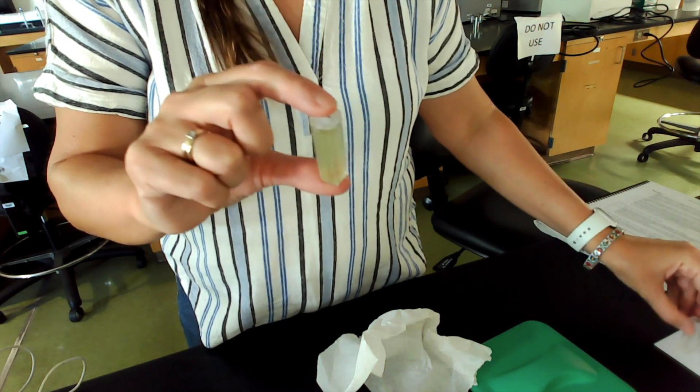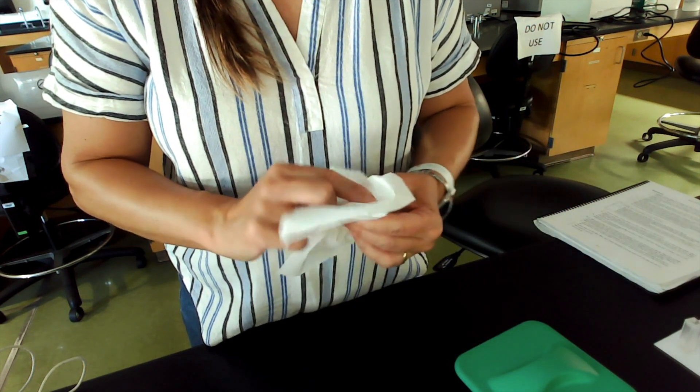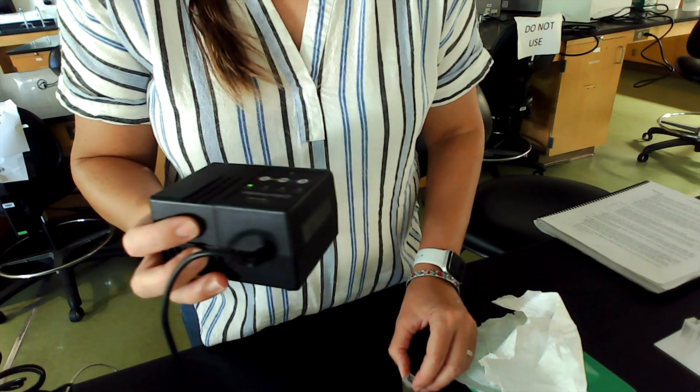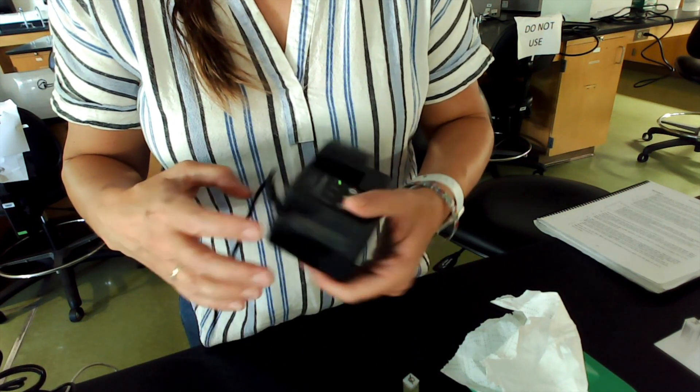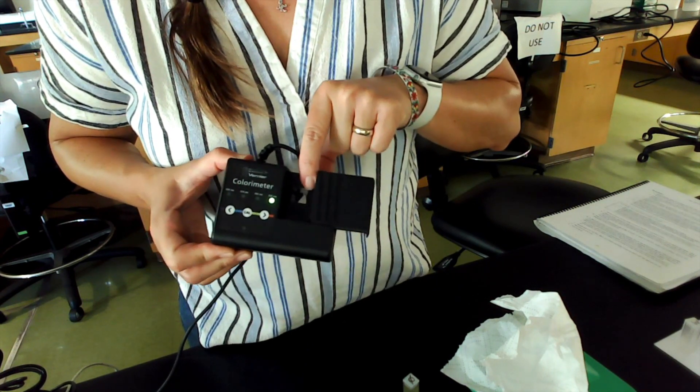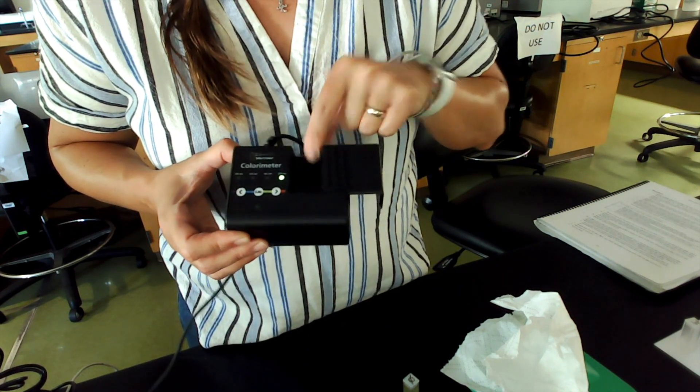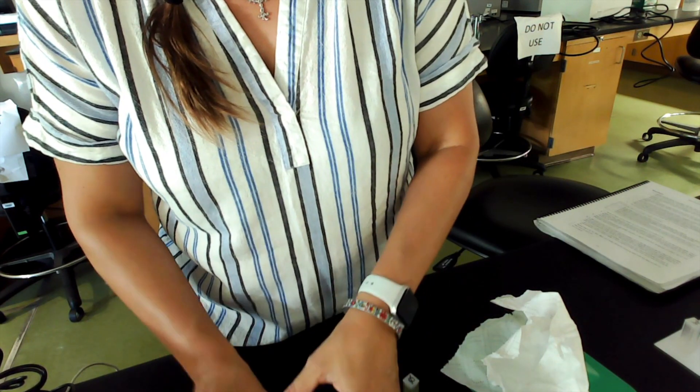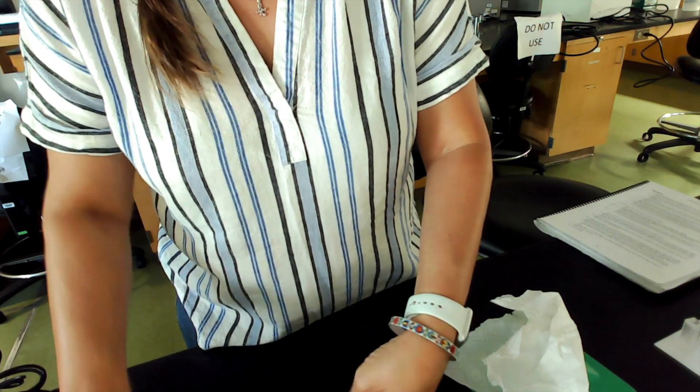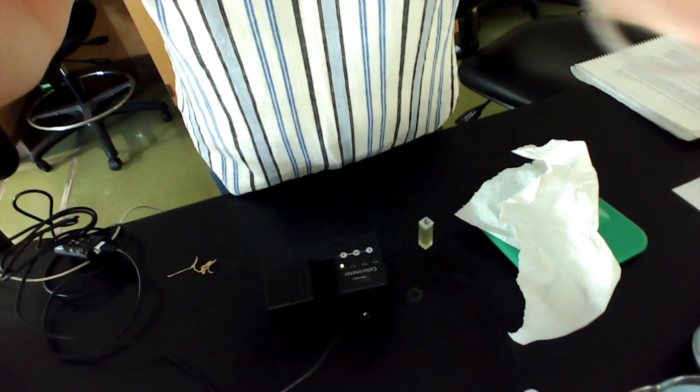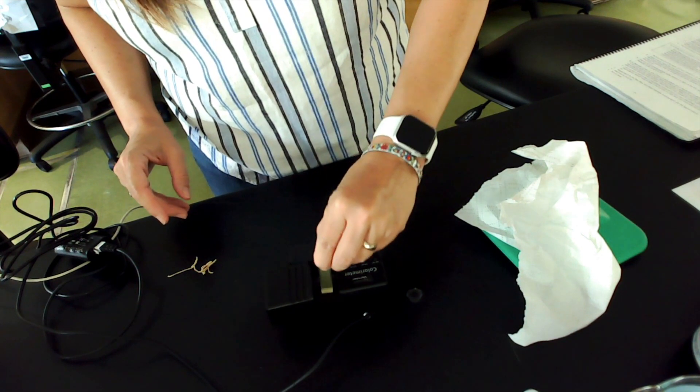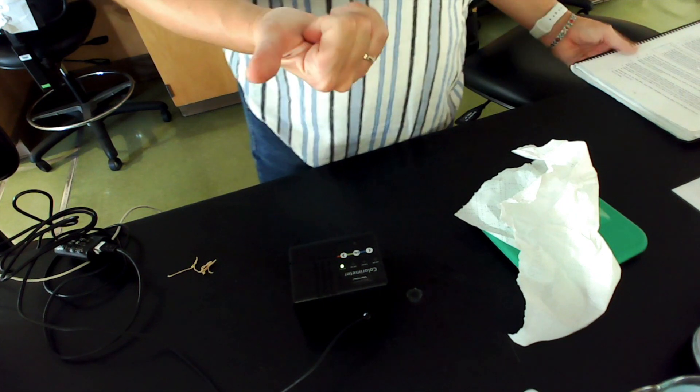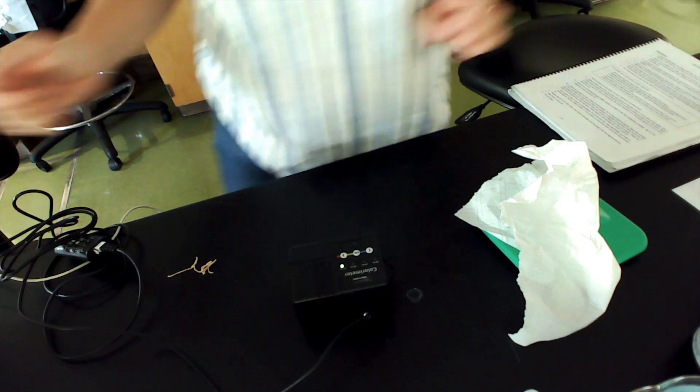You have to orient the cuvette when you put it into the colorimeter. You have to make sure that the clear sides face where there's a tiny little triangle on this door. Because the clear sides are where the light's going to shine through. I'm going to drop this in and then close the door. Then I'm going to switch over to my other camera here.